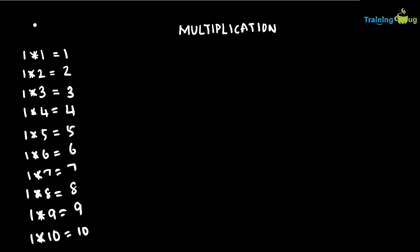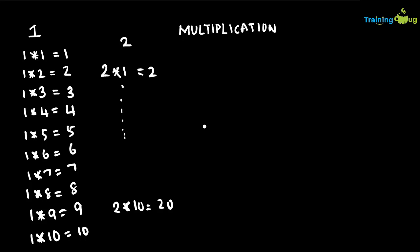Similarly for 2, it starts with 2 into 1 equals 2, all the way to 2 into 10 equals 20. We need to write a program that prints the multiplication table from 1 to 10, covering tables 1, 2, 3 through 10. So how are we going to find the logic?